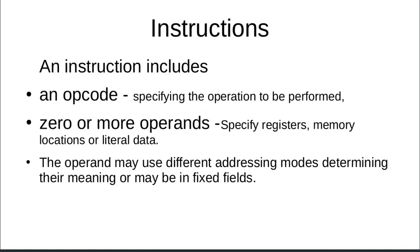Every instruction includes two parts: the first is an opcode, which specifies the operation to be performed. The second part includes 0 or more operands. These operands may specify registers, memory locations, or some literal data. They may use different addressing modes which determine their meaning, or they may be in fixed fields.